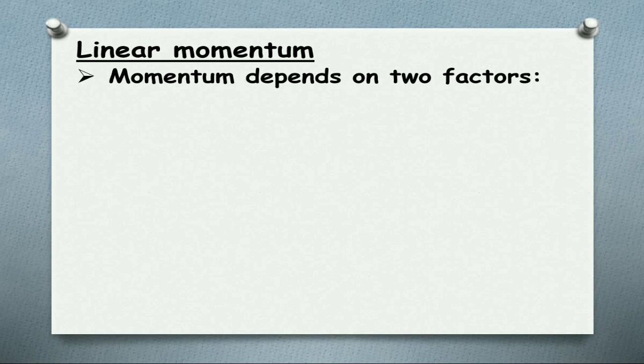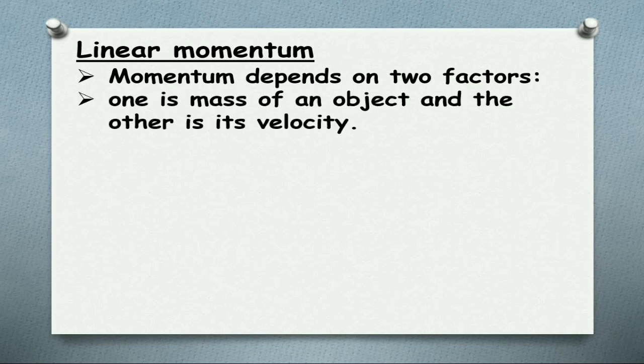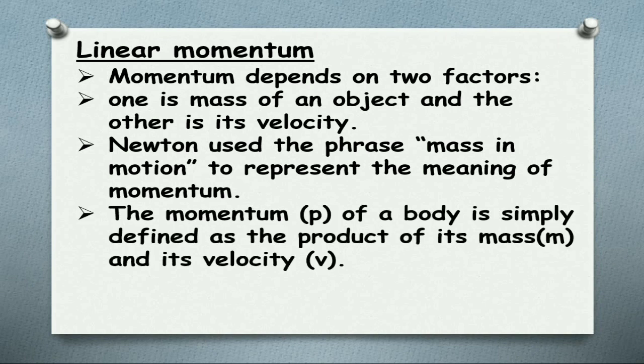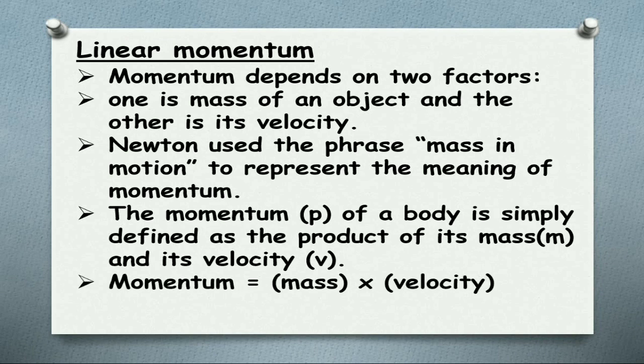Linear momentum depends on two factors: mass of the object and its velocity. Newton uses the phrase 'mass in motion' to represent momentum. Mass means it contains mass, motion means it contains velocity. Together he called it linear momentum. Momentum is defined as the product of its mass m and its velocity v. That is p equals m into v.